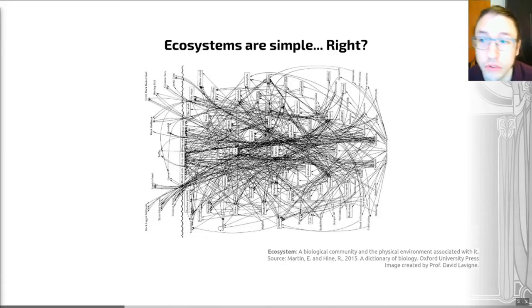If we think about the definitions of some of the more important words that I've just introduced you to, one of these is ecosystem. There's a definition on the slide for you here. This is a biological community and the physical environment associated with it. It's a very simple definition, but ecosystems themselves are actually really, really complex things. And this makes drawing even broad patterns challenging within ecosystems.